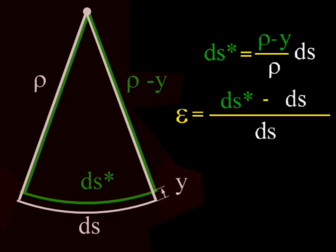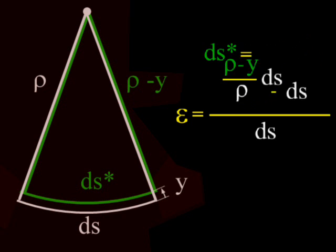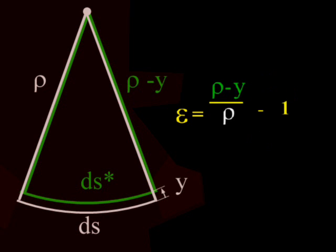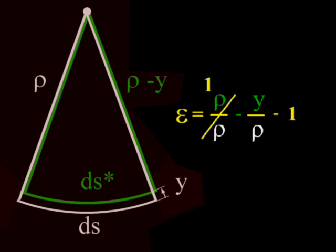We can substitute ds star from the previous equation. Divide through by ds, simplify, expand the first term on the right side into two fractions, simplify again, cancel the two ones with each other, and we are left with epsilon equals minus y over rho.